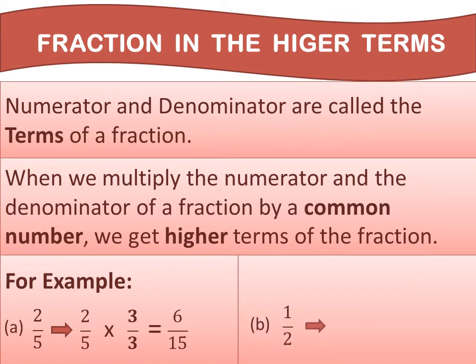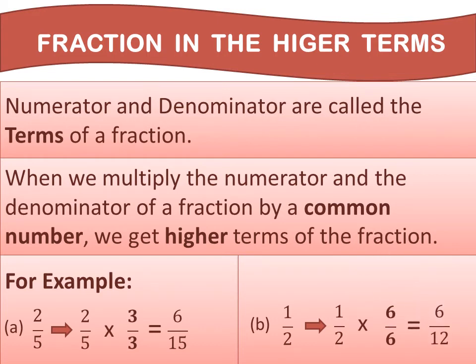Let's solve one more example: 1 upon 2. To increase the higher term of 1 upon 2, we multiply the numerator and denominator by the same number other than 0 or 1. If we take 6 as the common number, we get 6 upon 12. So, 6 upon 12 is a higher term of 1 upon 2.